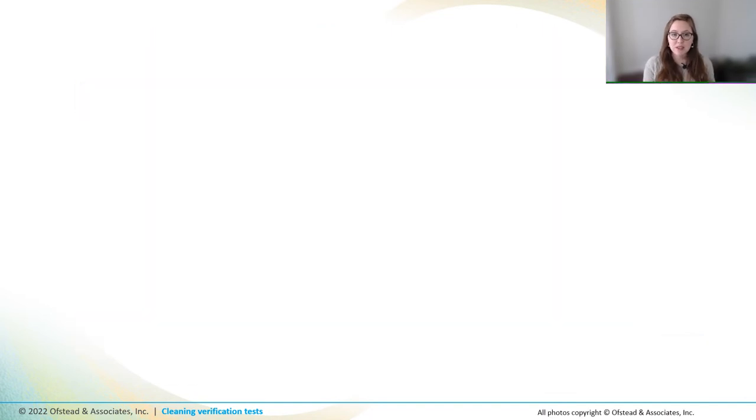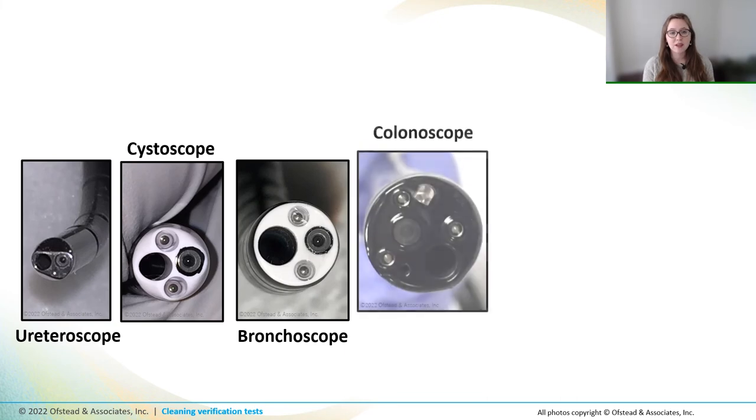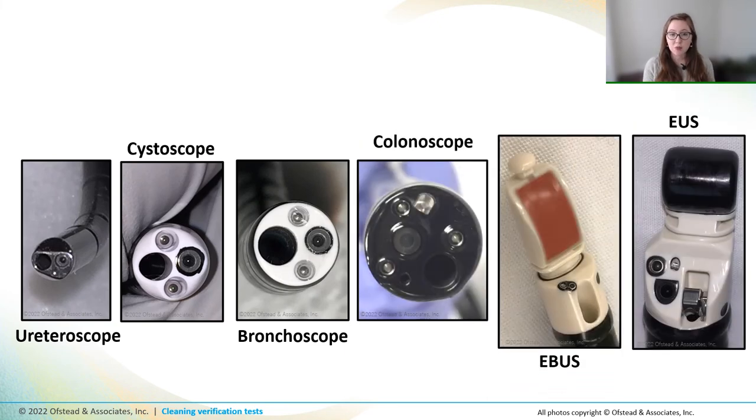Now, when you think about sampling the distal ends, keep in mind that there are big differences between scopes like urology scopes, bronx, big GI scopes like colonoscopes, and ultrasound scopes like EBIS and EUS scopes. That means that something that seems as simple as taking a sample from the distal end can open up a total can of worms, because swabs that fit in nooks and crannies on some scopes might not fit into others. So that's something to keep in mind.